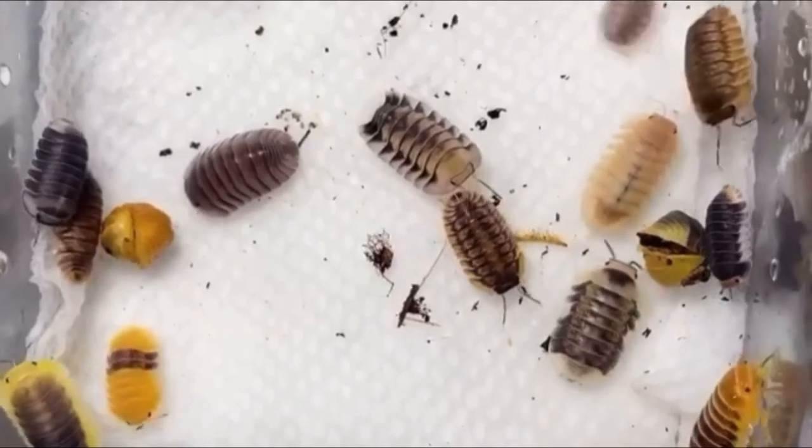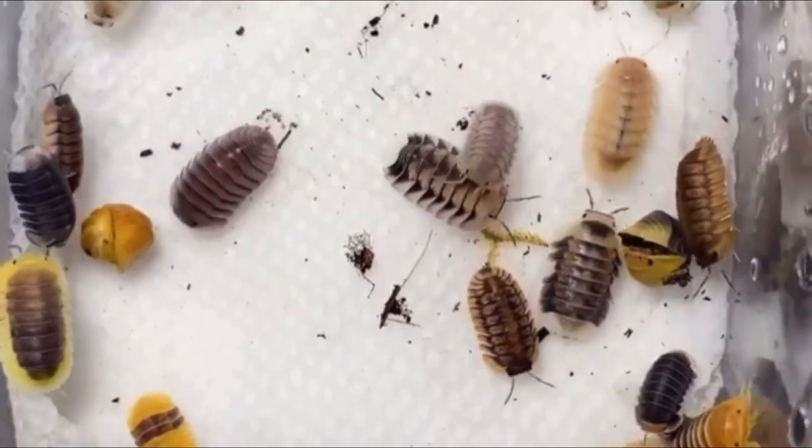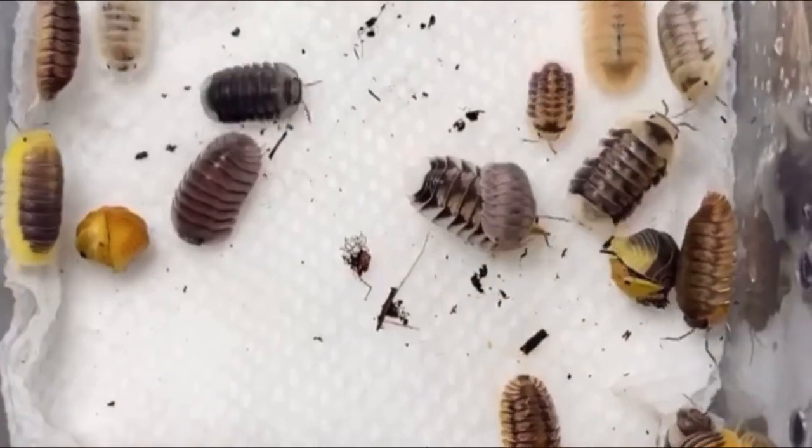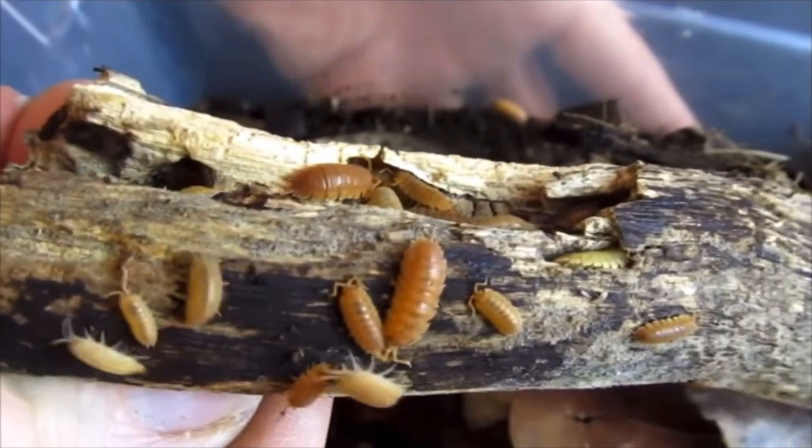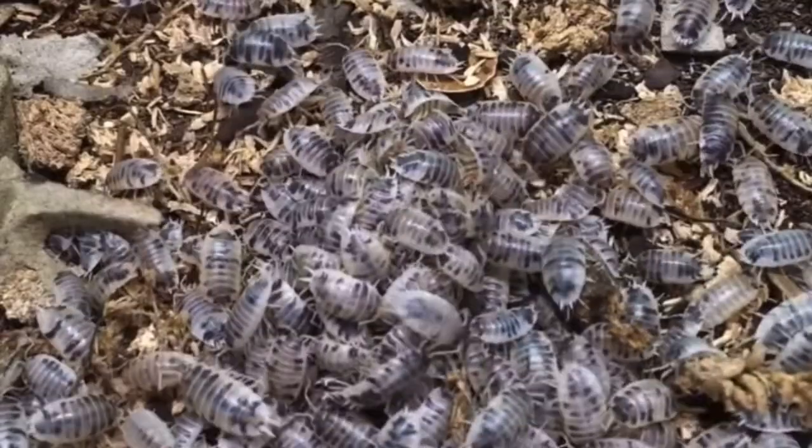If you are interested in isopods you might already know that they can come in many different colors and patterns, ranging from pure white, orange and even the patterning of dairy cows.